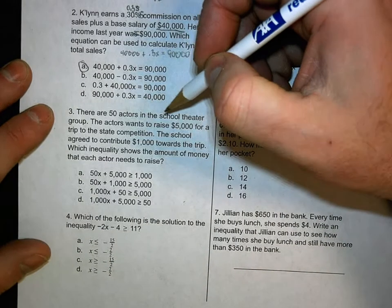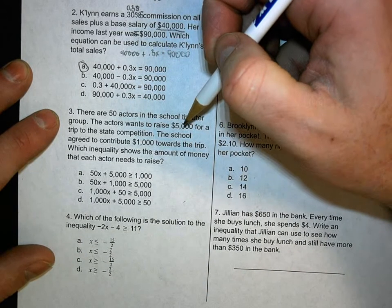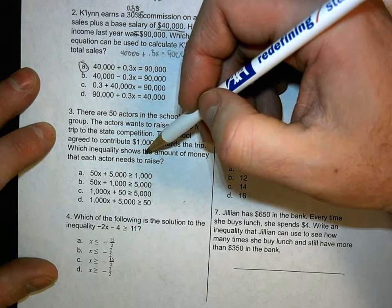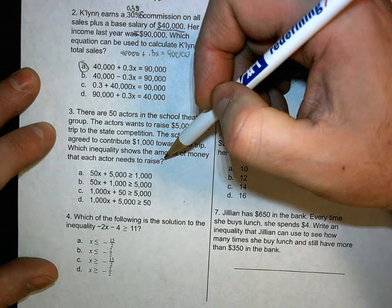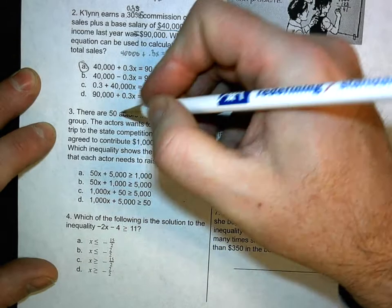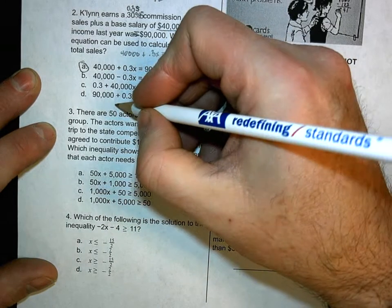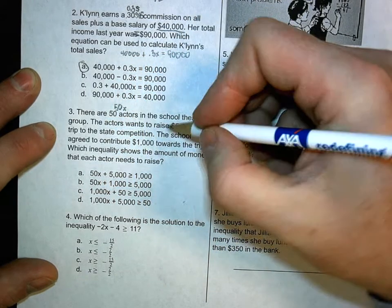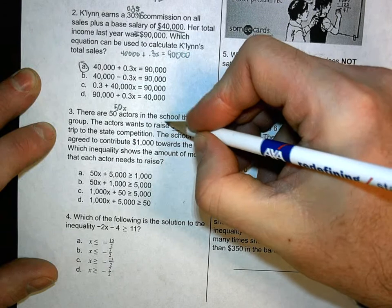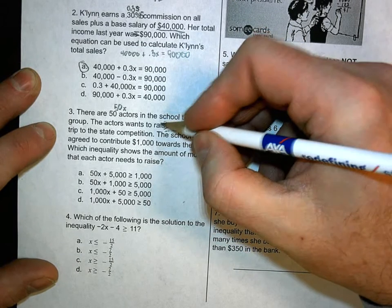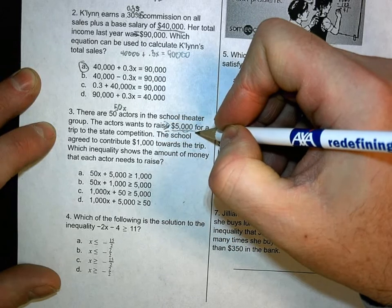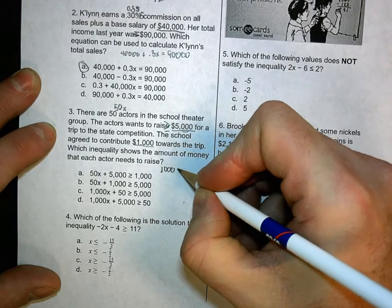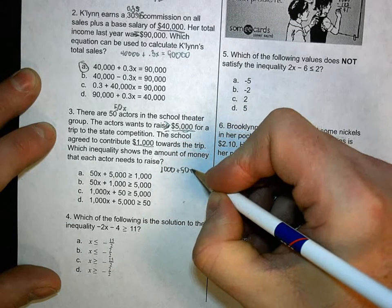Question number three. There are 50 actors in the school theater group. The actors want to raise $5,000 for a trip to the state competition. The school agreed to contribute $1,000 towards the trip. Which inequality shows the amount of money that each actor needs to raise? So each actor is what we did. So 50 is the actors and they need to raise a certain amount of money. We're going to use x. So 50 actors each needs to raise a specific amount. The goal we want is we want at least.